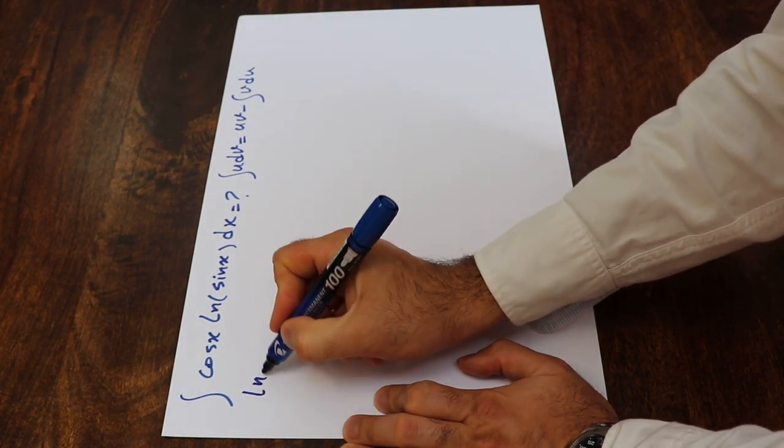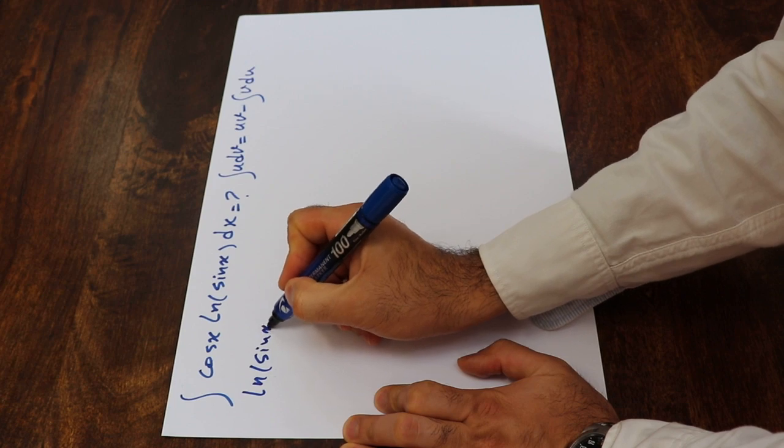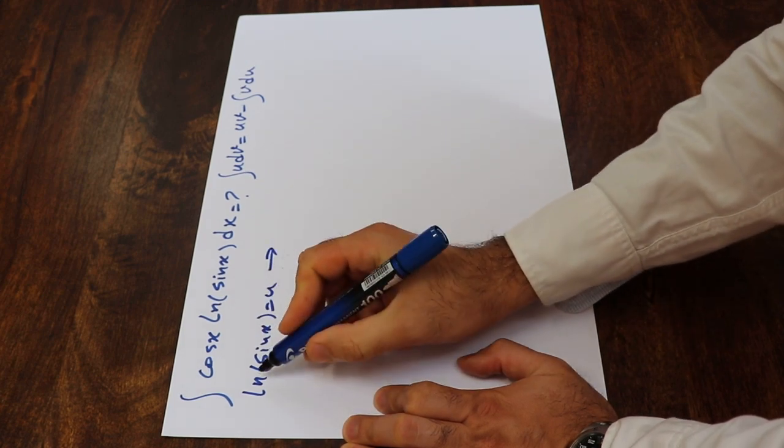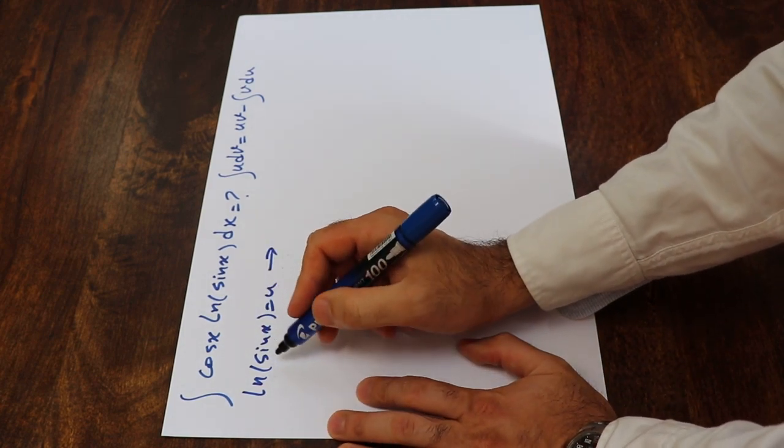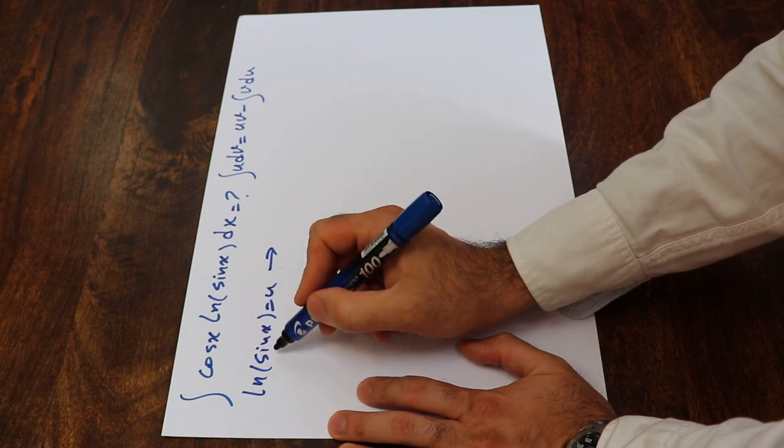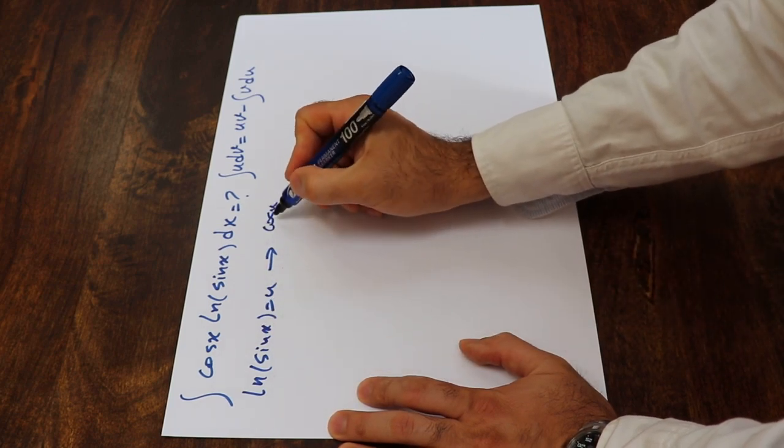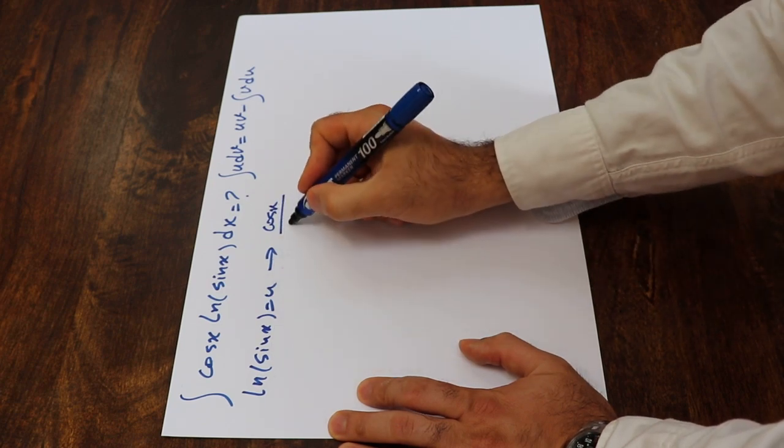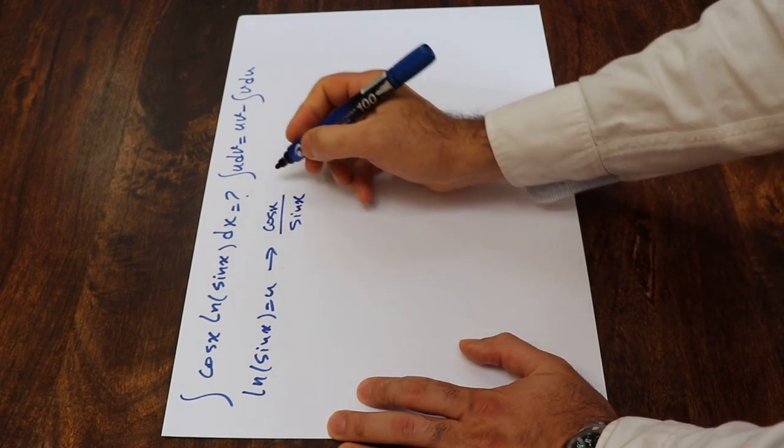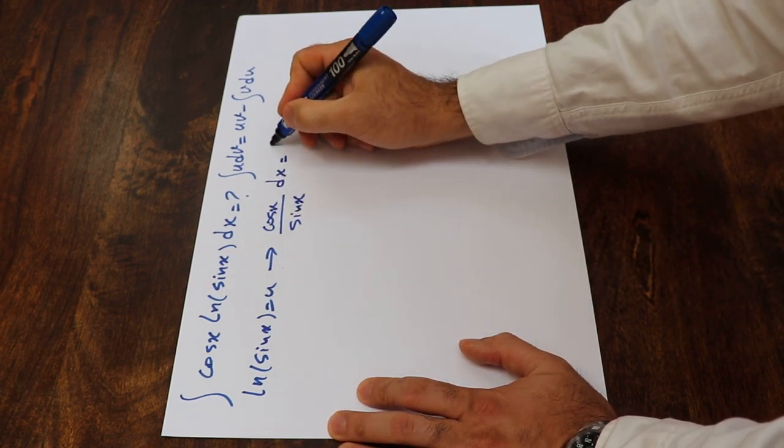So here, if I define ln sine x as u, and if you take the derivative from each side of this equation, the derivative of ln sine x will be equal to cosine x divided by sine x. So du will be equal to cosine x over sine x dx.